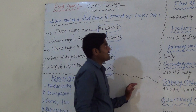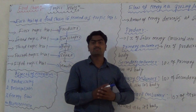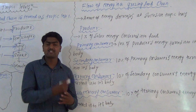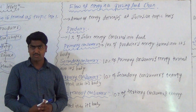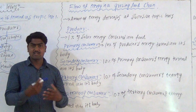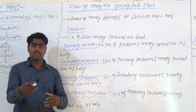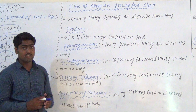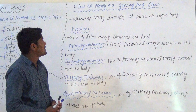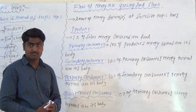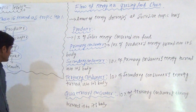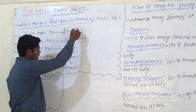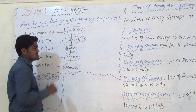The next part is the energy flow in a grazing food chain. You already know a little bit about the grazing food chain as well as the detritus food chain. The food chain that starts from a producer is called the grazing food chain. We are now going to study the energy flow in this grazing food chain.